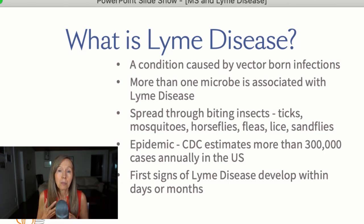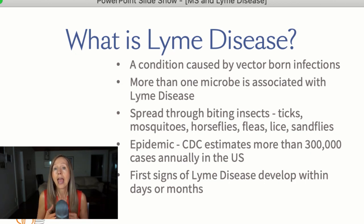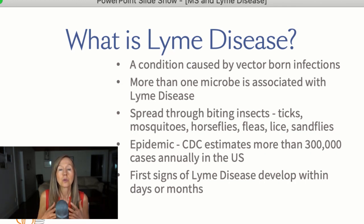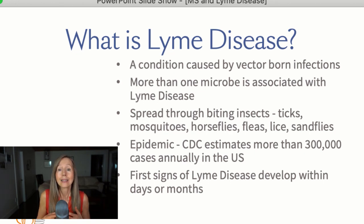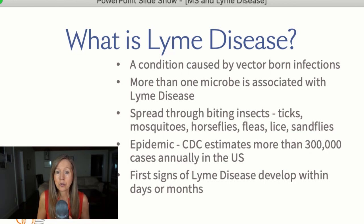We will talk about Borrelia, the traditional bacteria associated with Lyme disease, but also Babesia, which is very common in multiple sclerosis, and Bartonella — and Ehrlichia as well, though we'll focus on the first three. We become infected by these microbes mainly through biting insects: ticks, mosquitoes — and most mosquitoes are infected with these different microbes — horse flies, fleas, biting flies, lice, fleas on our cats, and sand flies.